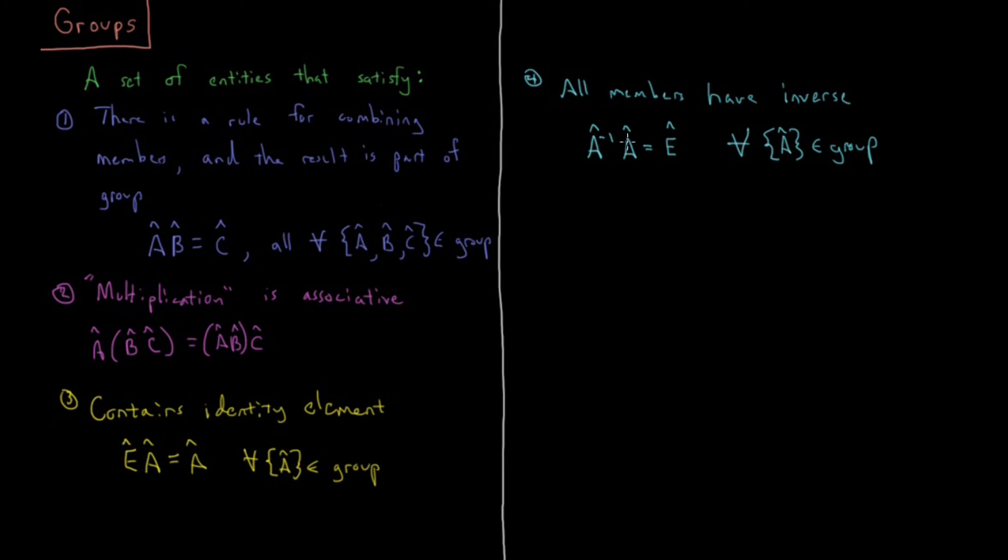Every identity element is the inverse of itself, because E times E equals E. We have Sigma is usually the inverse of itself, because Sigma twice gives you E, as we said in the first video. C2 is itself inverse, because C2 squared is E. C2 squared is C1, which is rotation by 360 degrees, is E. Then other elements might have more complicated inverses that aren't themselves, or it might not necessarily be obvious from the start.